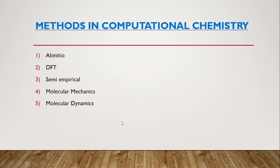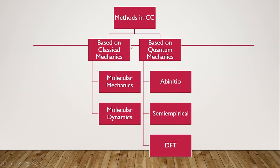We will be discussing various aspects of these methods in the coming slides. If you want a detailed idea about these methods, you can refer to my past videos. Dividing these five methods, you can classify them as methods based on classical mechanics and methods based on quantum mechanics. Molecular mechanics and molecular dynamics are based on classical mechanics, whereas ab initio, DFT, and semi-empirical are based on quantum mechanics.